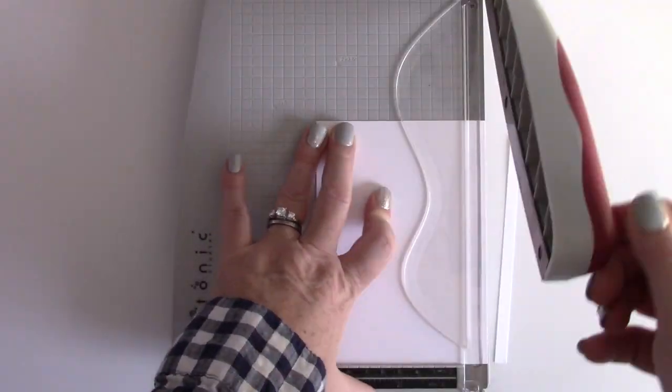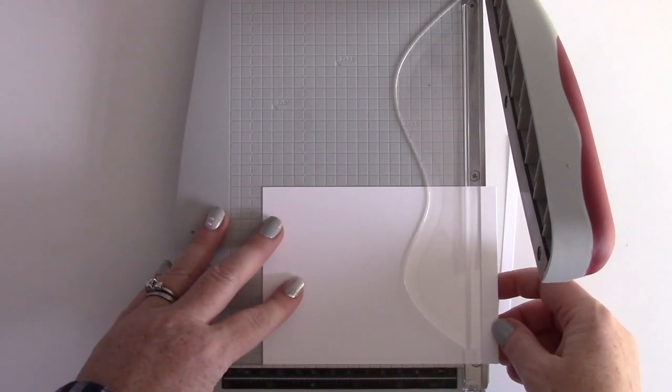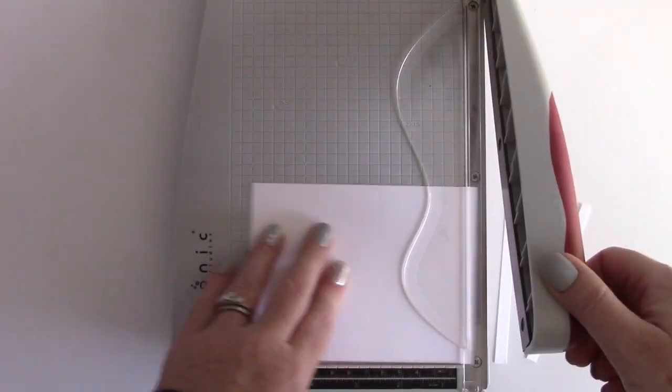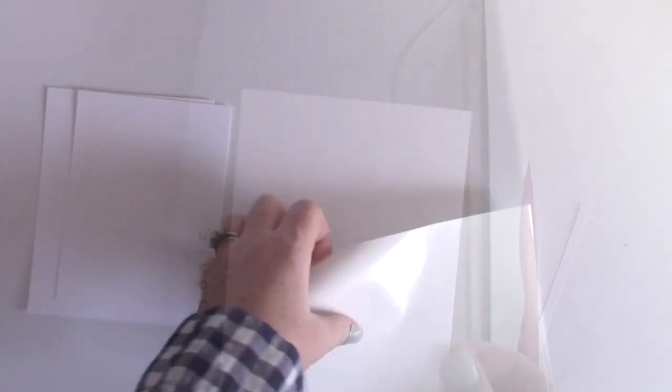The first thing I'm gonna do is grab some white cardstock, pretty heavyweight, at least 110 pounds. I'm gonna cut it smaller than four and a quarter by five and a half because I want this to be a panel that's gonna sit inside the card base.